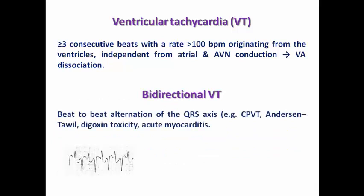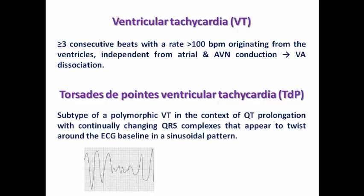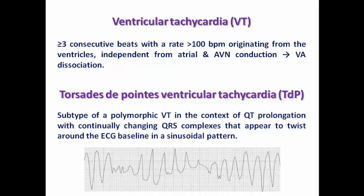Bidirectional VT is a subtype showing beat-to-beat alternation of the QRS axis, which may occur in catecholaminergic polymorphic VT, Andersen-Tawil syndrome — a subtype of long QT syndrome — digoxin toxicity, or acute myocarditis. The famous Torsades de Pointes is a subtype of polymorphic VT in the context of QT prolongation, resulting in continually changing QRS morphology regarding the axis.